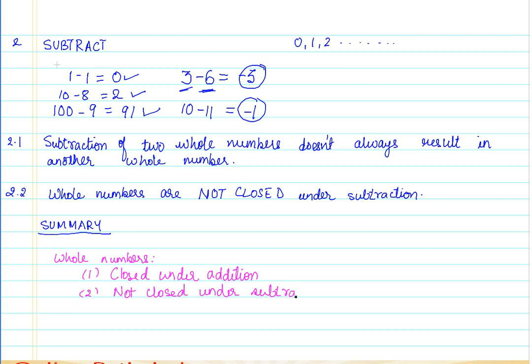So these are the two key things. And how did we arrive at this? Because whenever we do addition of two whole numbers, the resulting number is always a whole number, hence it is said to be closed. And that is not the case when we go for subtraction.